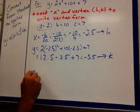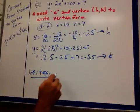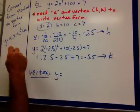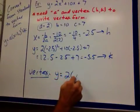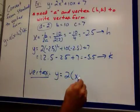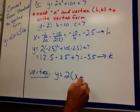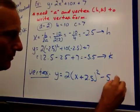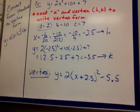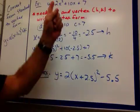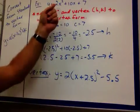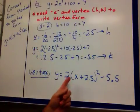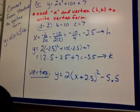So, vertex form. Let's plug everything in. f(x) or y, it doesn't matter. It's going to be a, which we know is 2, x minus my h is negative 2.5. So, minus the negative will be plus 2.5 squared plus k, which is negative 5.5. There's my answer. So, I took standard form to vertex form. I got my a. I just needed to find the vertex, x and y. Then plug in the a, the h, and the k, and you got it.